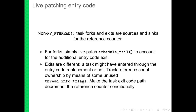Forks and exits are sources of sync for the reference counter and must be dealt with. For forks it's simple — just let schedule_tail increment the counter when returning to the new entry code replacement. Exits are more difficult because we can't tell whether the task entered through the original or the replacement, since tasks can sleep for extended periods. So we track the reference count ownership in thread_info flags — there are some spare ones on the SLE 12 kernels — and the exit code decrements only after checking those flags.